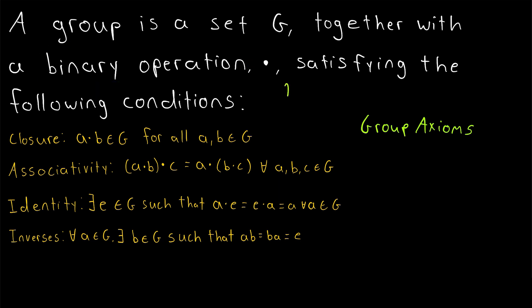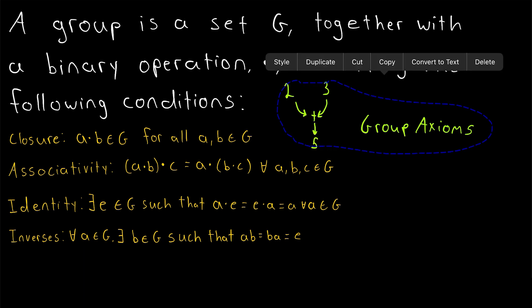Even though the set and the binary operation together form the group, we'll often refer to the group by the name of the underlying set. So if the set is G, we'll often call the group G as well. A binary operation at the most basic level is just a function that takes in two objects and spits out some third object. For example, addition is a binary operation — we could take two and three, put them into addition, and we get five out.